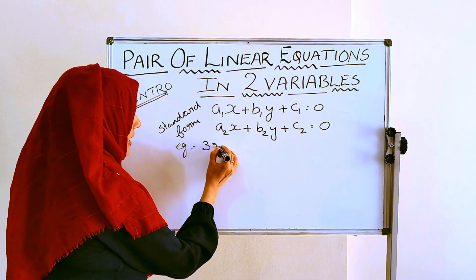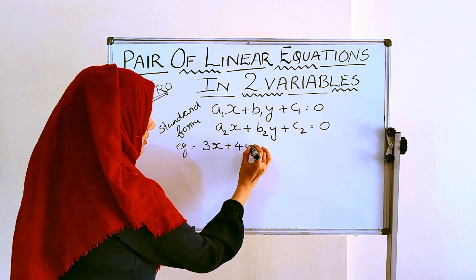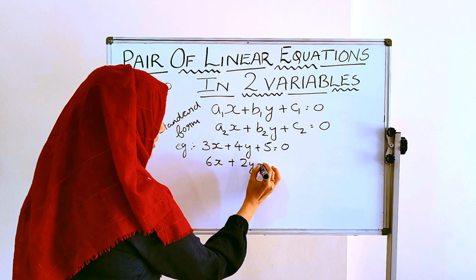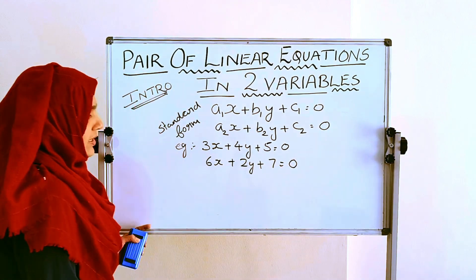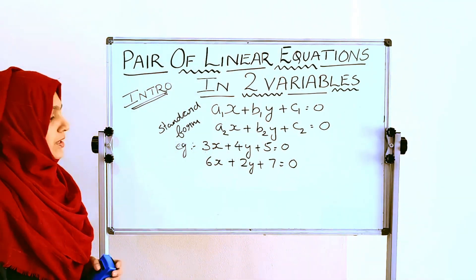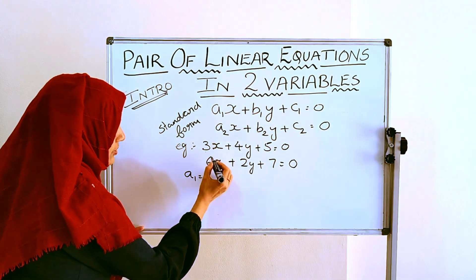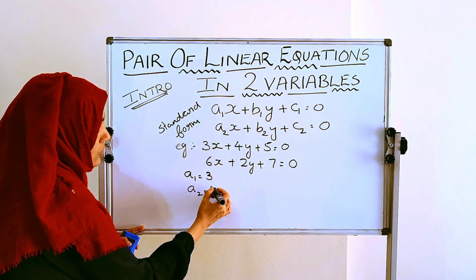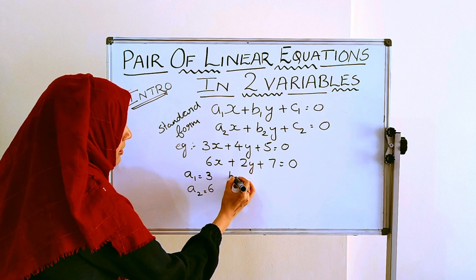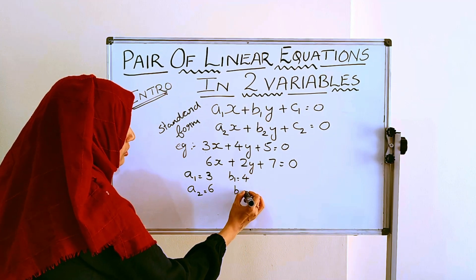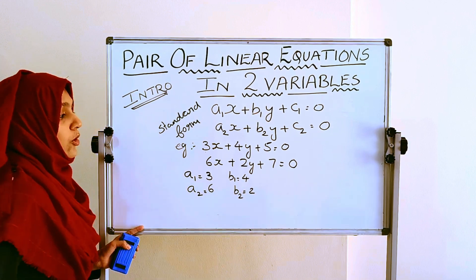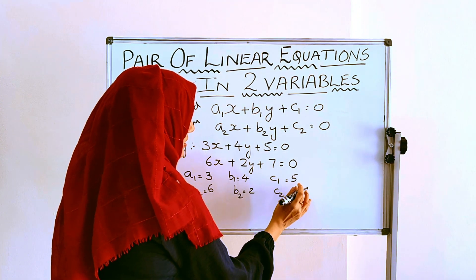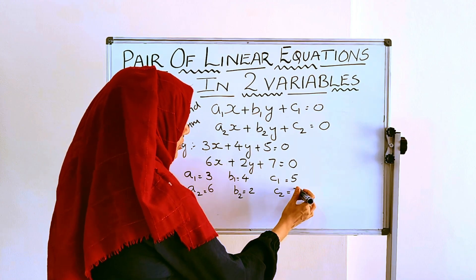Let us take an example: 3x plus 4y plus 5 equal to 0 and 6x plus 2y plus 7 equal to 0. Here a1 is the coefficient of x, so a1 is equal to 3. From the second equation, a2 is equal to 6. Similarly, b1 is equal to 4 and b2 is equal to 2 — these are the coefficients of y. And c1 and c2 are the constants: c1 is equal to 5 and c2 is equal to 7.